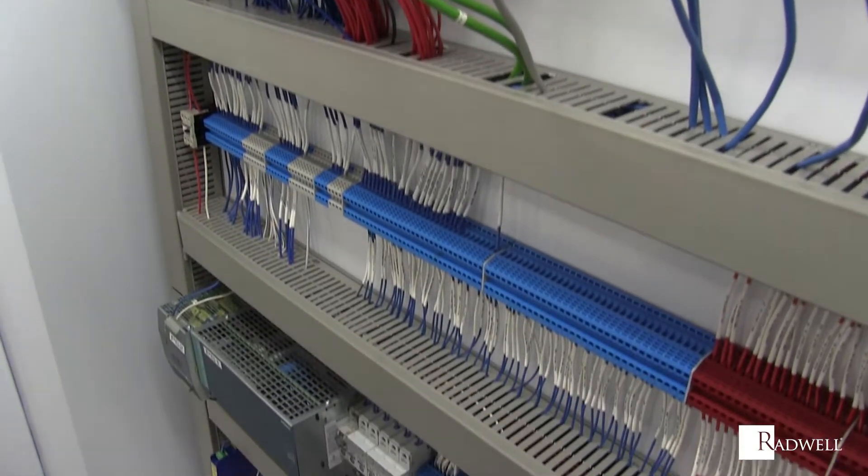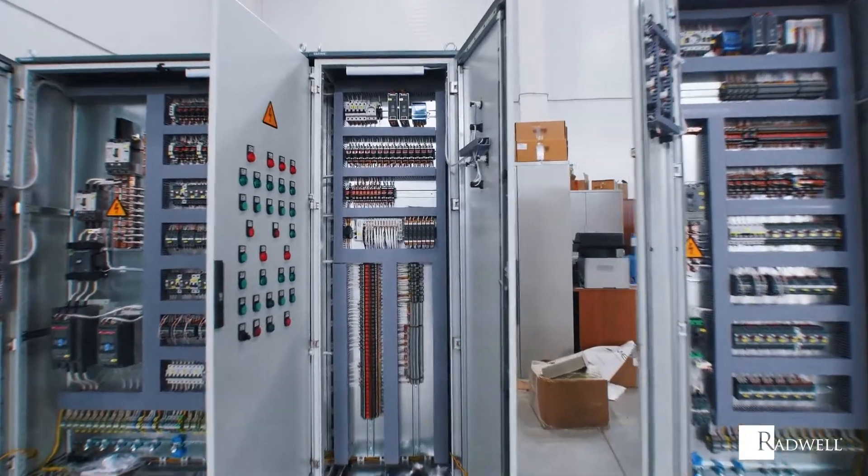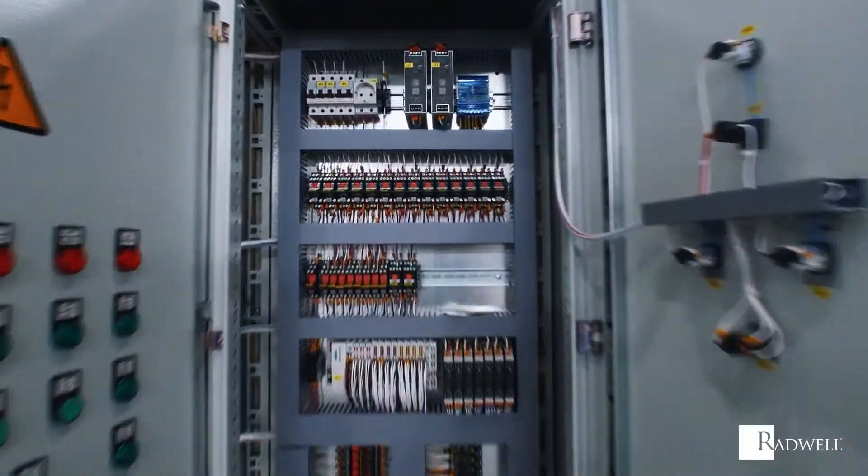To assist in wiring organization, wire ducts will usually include bonding clips, noise barriers, wire slots, and cable ties.